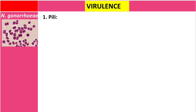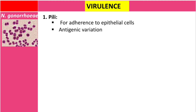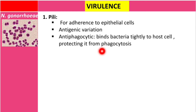Let's talk about virulence factors. The most important one is pili. The first function of pili is adherence to epithelial cells. The second function is antigenic variation — this is why there is no immunity to repeated infection. There is a kind of recombination, so if you are infected by a certain strain, treated, and then re-exposed, you can be infected again because of this antigenic variation.